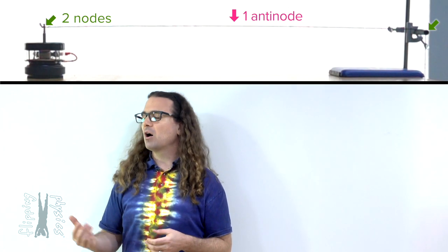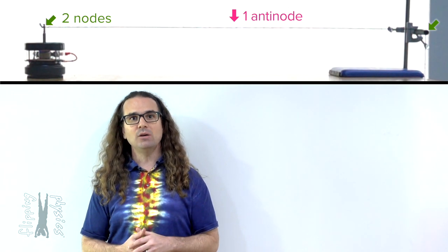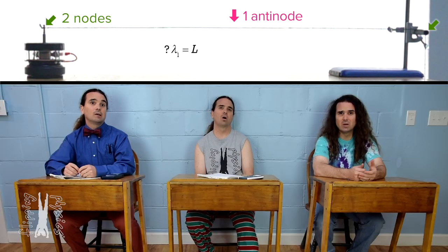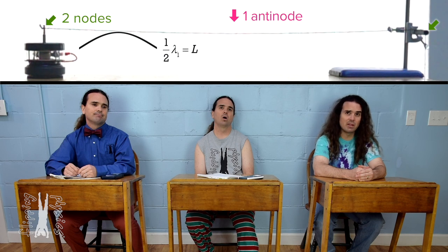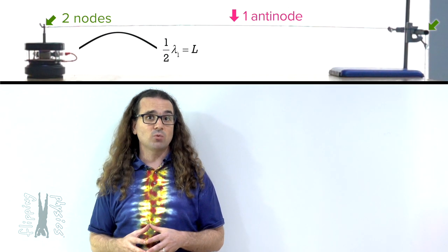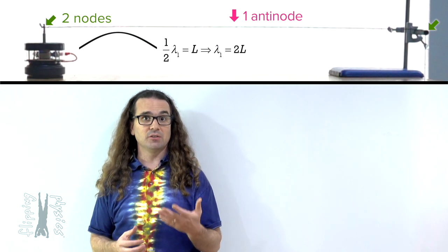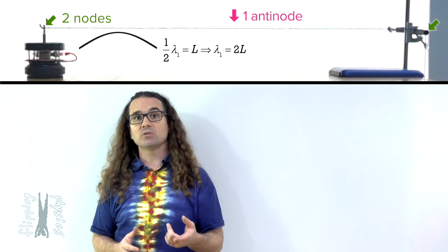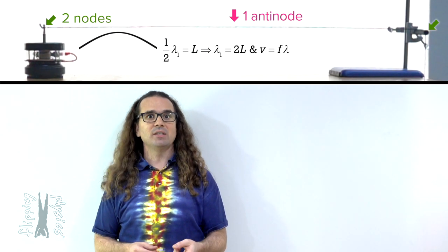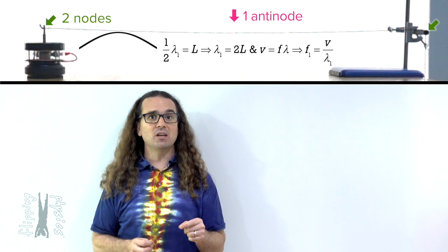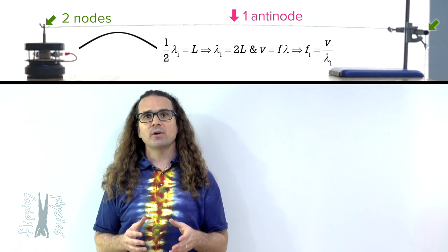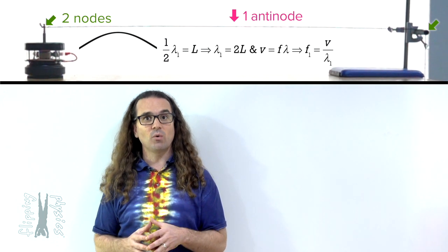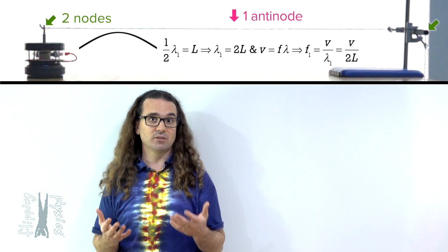When this is the case, how many wavelengths equal L, the length of the string? That standing wave pattern represents half a wavelength, so half a wavelength equals L, the length of the string. Therefore, the wavelength of this wave equals two times the length of the string. The frequency of the wave on this string will equal the speed of the wave divided by the wavelength — or for this standing wave pattern, the frequency equals the speed of the wave divided by the quantity two times the length of the string.